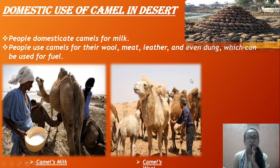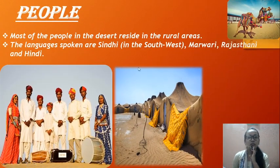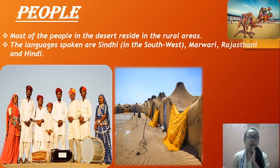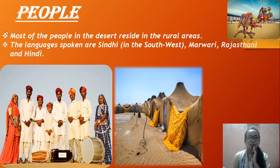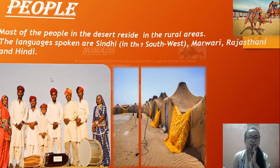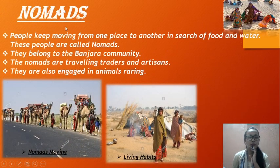Most of the people in the desert reside in rural areas. The languages spoken are Sindhi in the southwest, and Marwari, Rajasthani, and Hindi. Those are the languages spoken by the people of the desert.